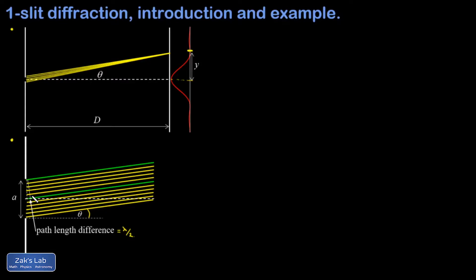Something very special happens if that path length difference is half a wavelength. The top ray and the one in the middle — the two labeled green — will interfere destructively when they arrive at the screen: a crest from one overlaps a trough from the other and they cancel. A ray second from the top and one just below the middle have exactly the same separation distance and the same path length difference, so those cancel too. Continuing this pattern, we take half the slit width — a over 2 — and at angle theta giving a path length difference of one half wavelength, all wavelets cancel pairwise across the entire slit, giving a dark spot.